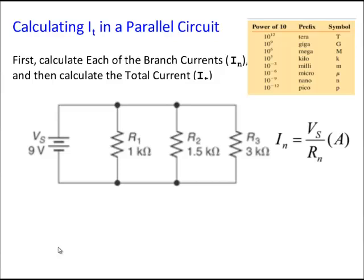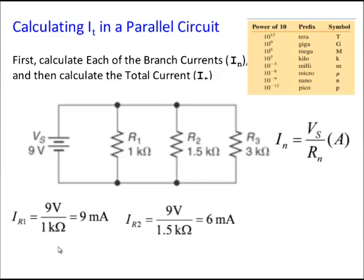Let's calculate some currents in a simple parallel circuit. The formula is provided for convenience, along with a powers-of-10 prefix table in the upper right. For IR1: IR1 equals 9 volts divided by 1 kilohm, which equals 9 milliamps. We don't need a calculator because 9 divided by 1 is 9, and the kilo prefix equals 10 to the third, which when moved to the numerator becomes 10 to the minus 3, or milli.